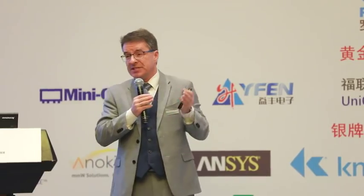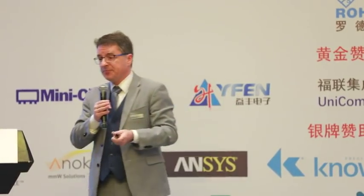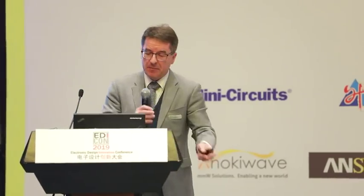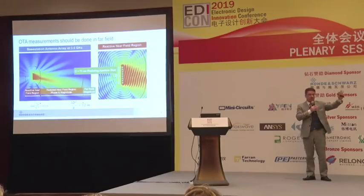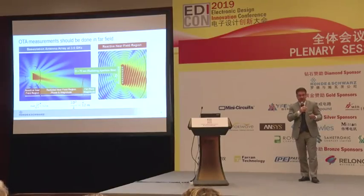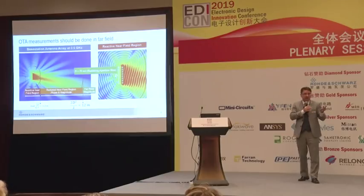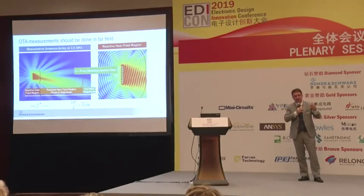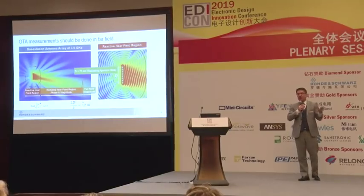All of this needs to be over the air because there are no connectors anymore. Over-the-air testing typically means measuring in the far field, defined as 2D²/λ. For a 3.5 GHz base station, typical for frequency range 1, this means about 12 meters distance between the device under test and your measurement antenna. Last week I visited a customer here in China using a chamber as large as 40 by 20 by 20 meters — if you're inside it feels like you're in a cathedral. That's what's being used right now.